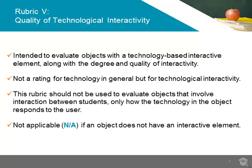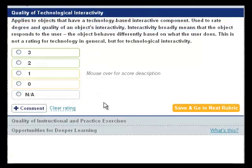Also, this rubric should not be used to evaluate objects that involve interaction between students, just to evaluate how the technology in the object responds to the user. If the object contains no technologically interactive components, users should rate the object NA, as this rubric is not applicable.